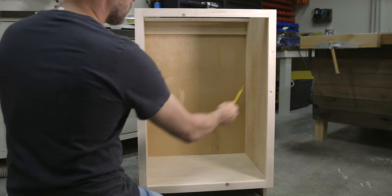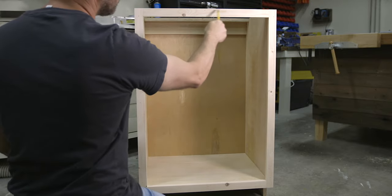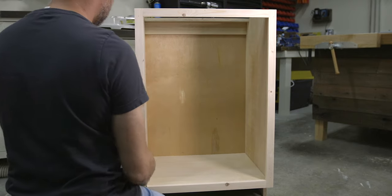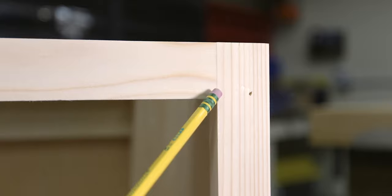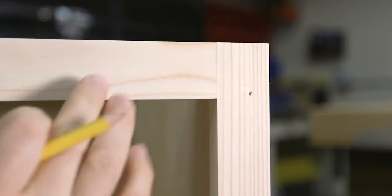When you're building face frames it's important to know the difference between the styles and the rails. The rails on the face frame run horizontally while the styles run vertically, and if you take a closer look you can see that the rails fit between the styles. This is really important to know when it comes to cutting and assembling the frame.